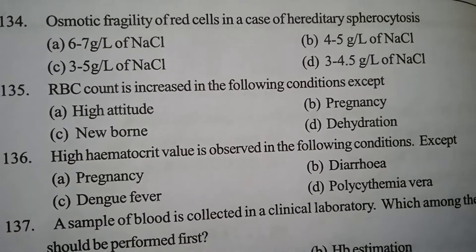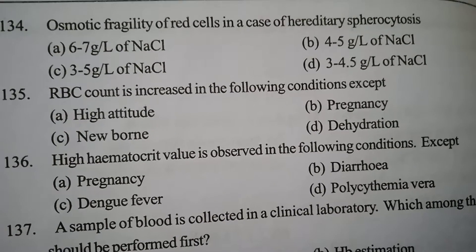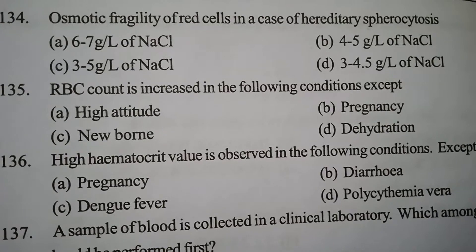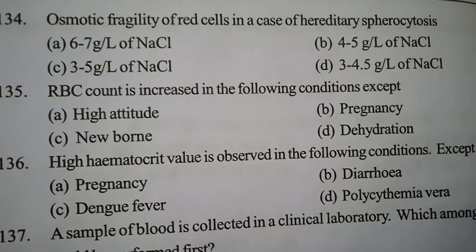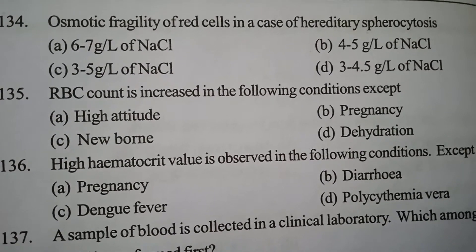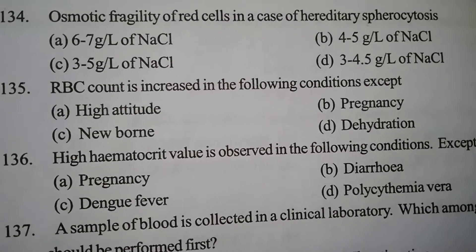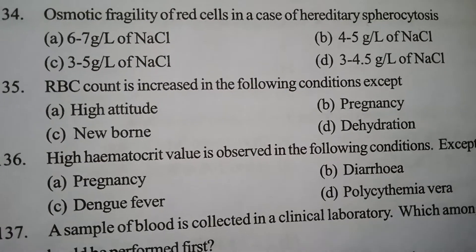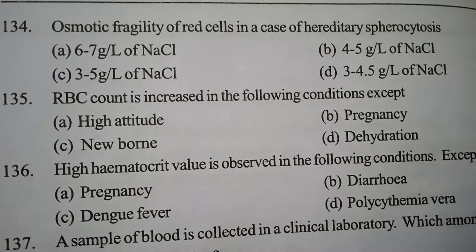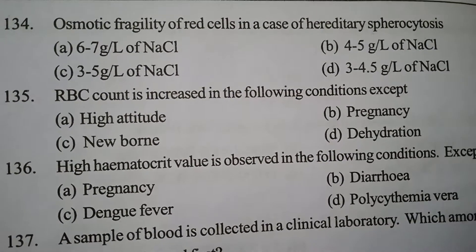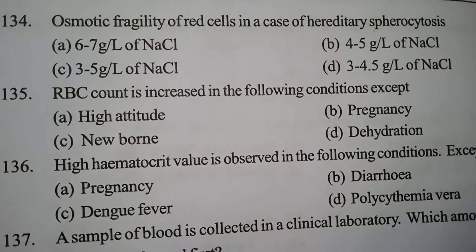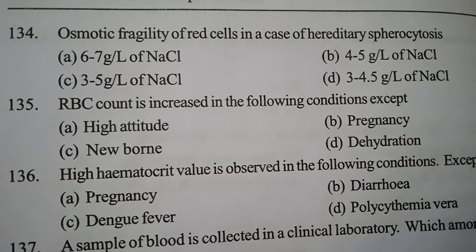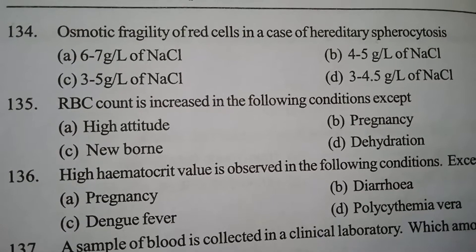First one. Osmotic fragility of red cells in a case of hereditary spherocytosis. Option A: 6-7 gm per litre of sodium chloride. Option B: 4-5 gm per litre of sodium chloride. Option C: 3-5 gm per litre of sodium chloride. Option D: 3-4.5 gm per litre of sodium chloride.